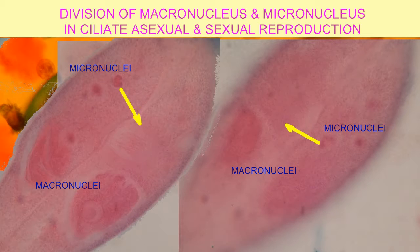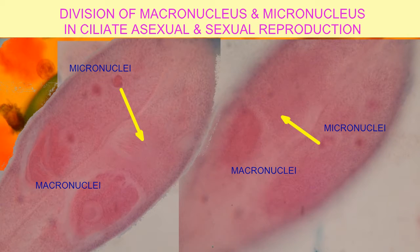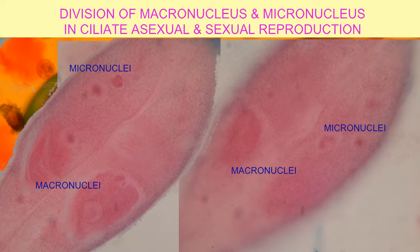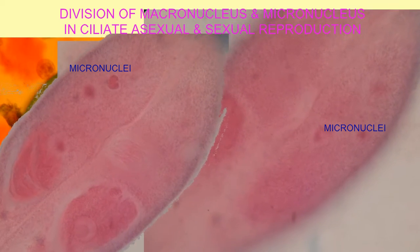between cells, and one micronucleus from each cell then travels to the opposite organism and fuses. The diploid micronucleus then divides to make a new macronucleus and micronucleus.